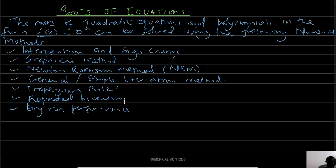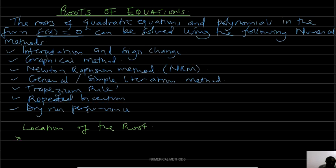Before one can solve the roots of an equation which is in the form f(x) equal to 0, we need to locate the root first by using the sign change method. There are two methods of locating the root: sign change and graph method.